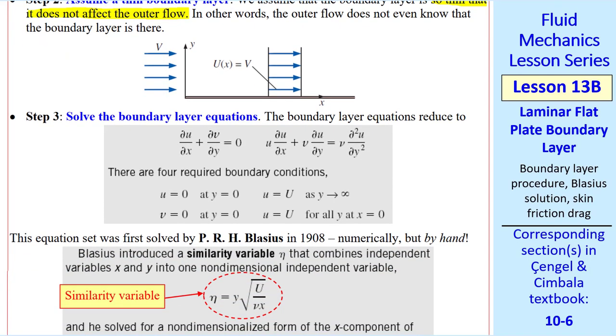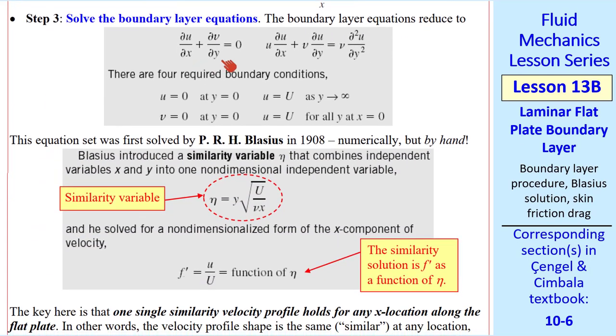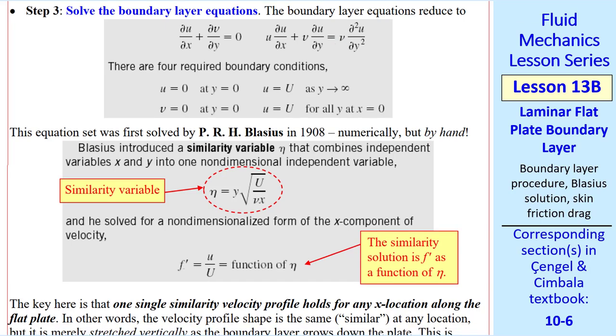Step 3 is to solve the boundary layer equations. Continuity is the same as we had above. And in this problem, since U is a constant, the pressure term, or the U du dx term, goes to 0. I list the four boundary conditions here. These two are the no-slip condition at the wall. This is the condition at the outer edge of the boundary layer.